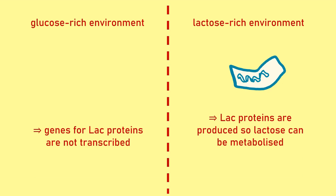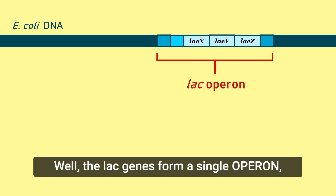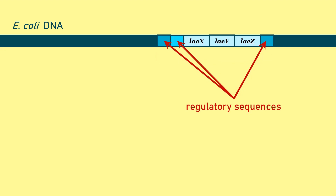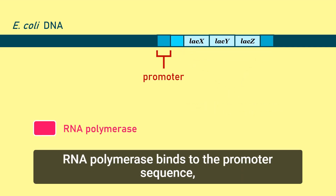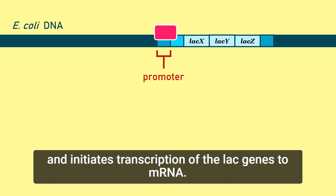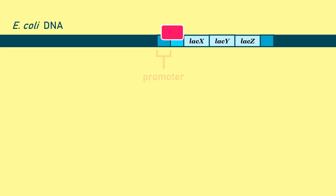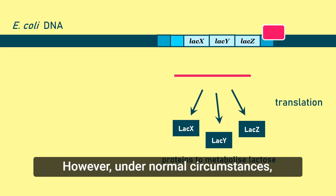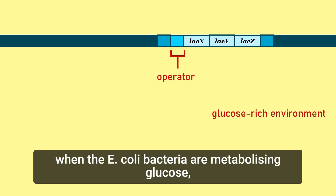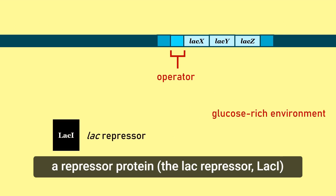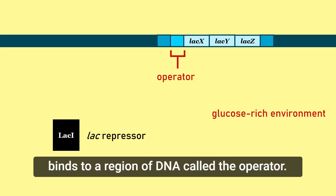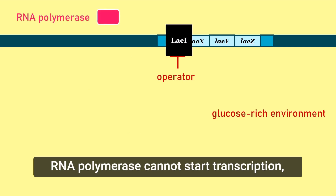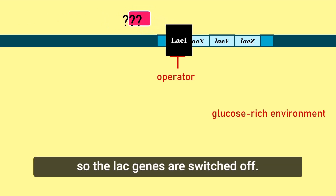How exactly does this work? Well, the lac genes form a single operon, which means that they share the same regulatory sequences and so are transcribed together. When the operon is switched on, RNA polymerase binds to the promoter sequence and initiates transcription of the lac genes to mRNA. However, under normal circumstances, when the E. coli bacteria are metabolising glucose, a repressor protein called the lac repressor, lac I, binds to a region of DNA called the operator. When the lac repressor is bound to the operator, RNA polymerase cannot start transcription, so the lac genes are switched off.